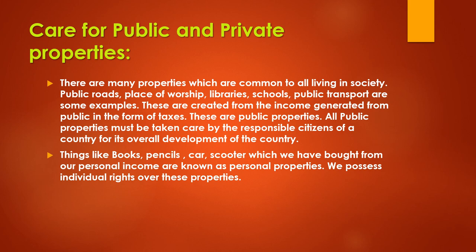The second type is private property — things like scooters, cars, jewelry, and houses which we bought from our personal income are called private properties. We possess individual rights over these properties, and nobody can use them without our permission. So there are two types of properties: public property, which is created from our taxes, and private property, which we bought from our personal income.